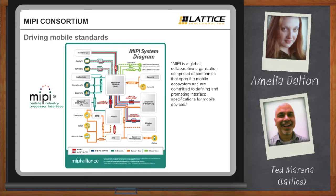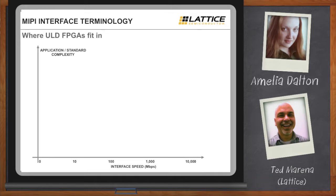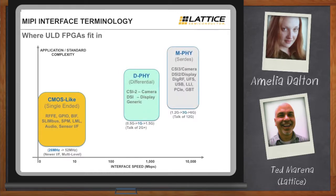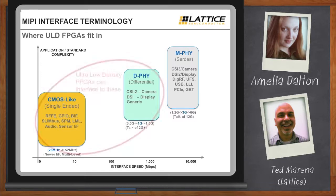Most people don't identify FPGAs with mobile applications — but that's something Lattice is very focused on. If you're interested in using a mobile architecture interface or peripheral, we can help. The MIPI buses range from very low-end, CMOS-like, single-ended buses for sensors and battery interfacing, up to higher-performance interfaces called DeFi, mainly used for cameras and displays. Ultra-low-density FPGAs can interface and bridge to these buses and peripherals.